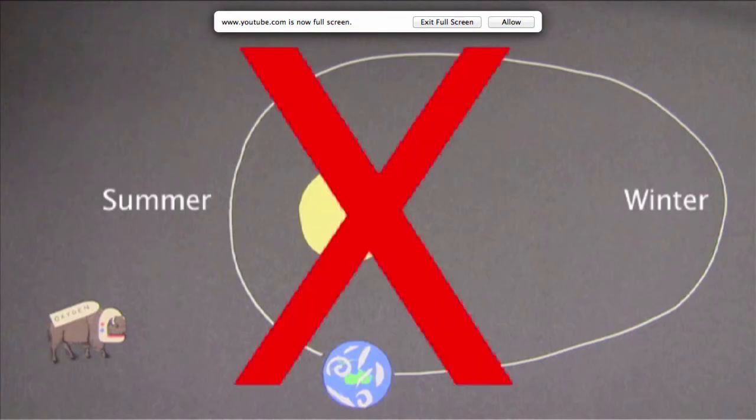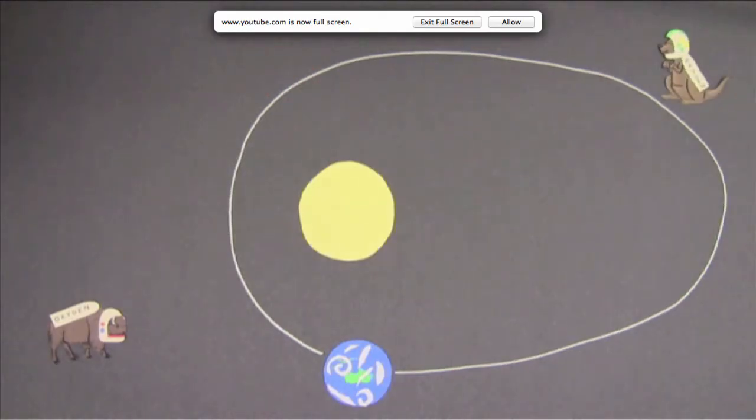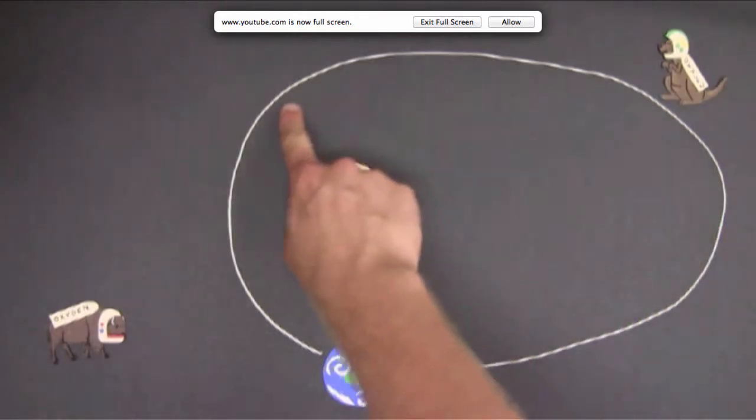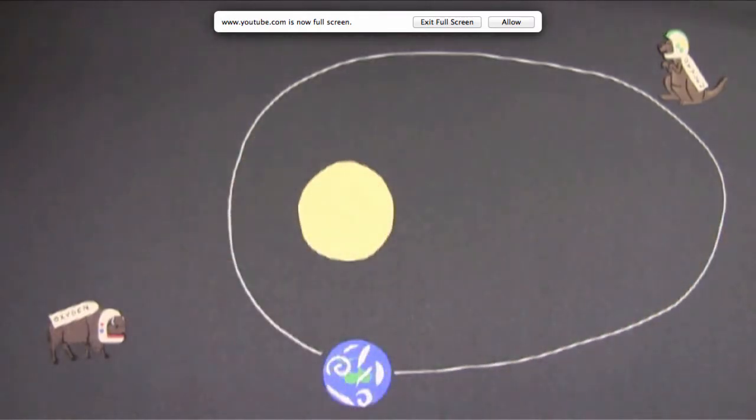If that were true, it would be summer in America and Australia at the same time. And we know that's not the case. Exactly. The way we've drawn earth's orbit here is really exaggerated. People just draw it that way to highlight the extremes.